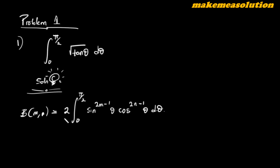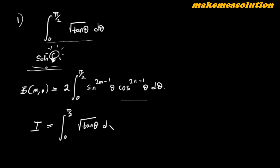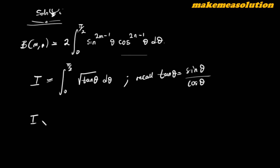This is an equivalent representation of the beta function B(m, n). If there's a way we can transform the given integral to this form, we are good to go. So I is equal to the integral from zero to π/2 of √(tan θ) dθ. Remember that tan θ is the ratio of sin θ to cos θ.